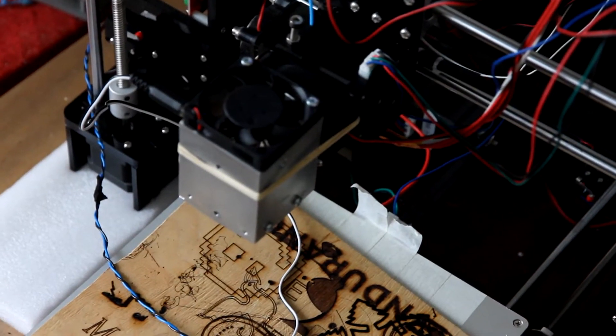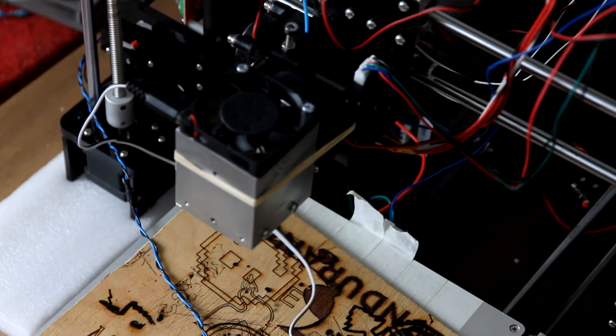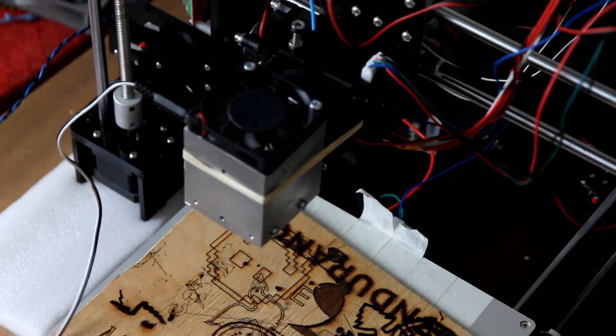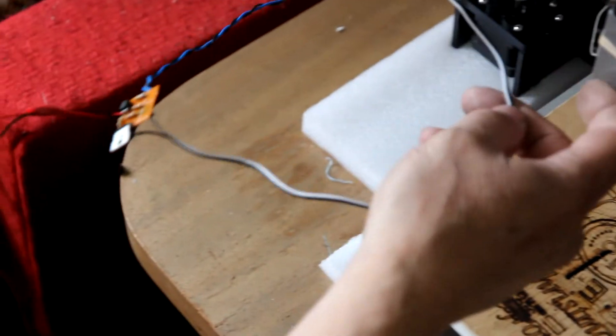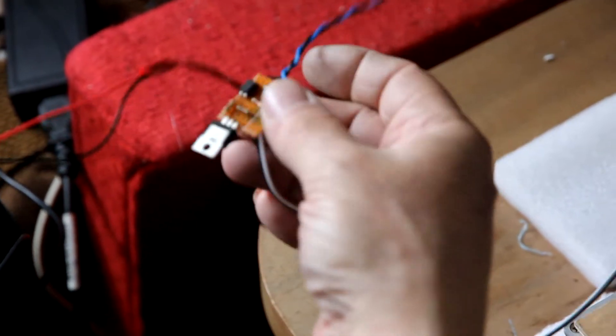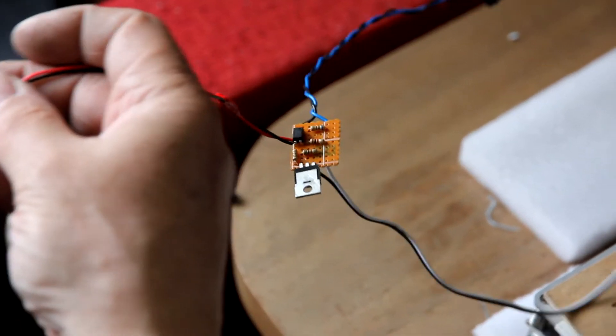Here we have 3.5W laser installed on a mount and now we are going to connect the laser with Endurance MO board. So this is our MO board.